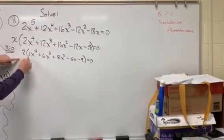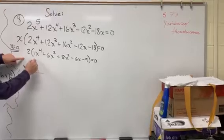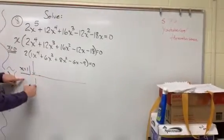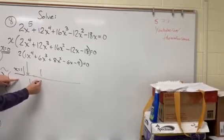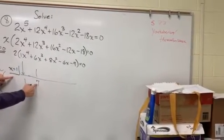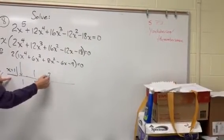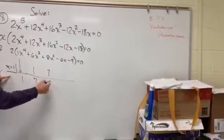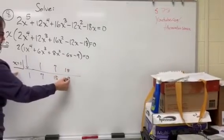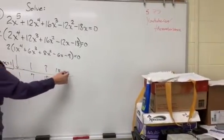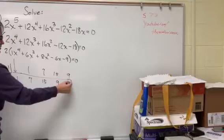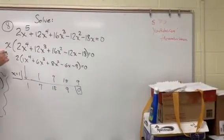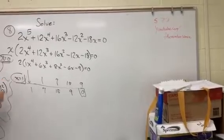So I bring the first term down, I bring 1 down, and I multiply 1 times 1, I get 1. 6 plus 1 is 7. 1 times 7 is 7, and I add those together. 8 plus 7 is 15. 1 times 15 is 15. Negative 6 plus 15 is 9. 1 times 9 is 9, and I get 0, which means that x equals 1 is one of our roots. So we have x equals 0, and we have x equals 1.